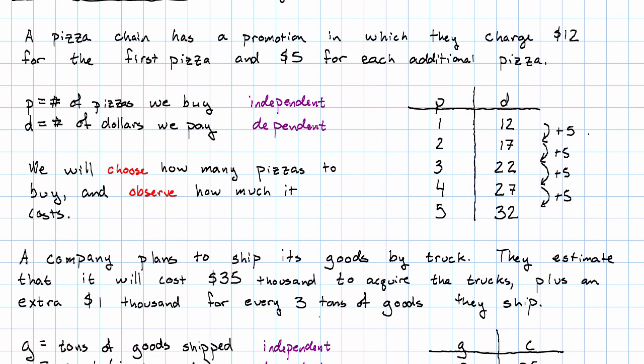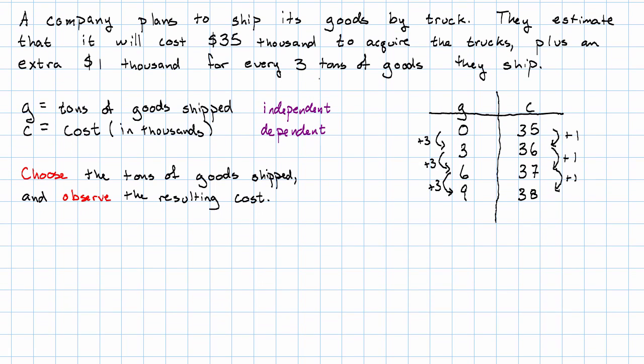In this problem, we could probably just continue the table on for as many pizzas as we want to buy. In this problem, however, we might want to have a more sophisticated way of getting to fairly large values of G. And that somewhat more sophisticated way is what we're going to see in the coming videos.